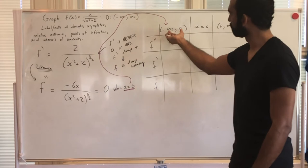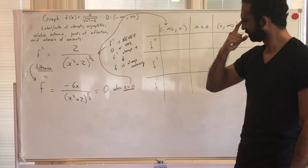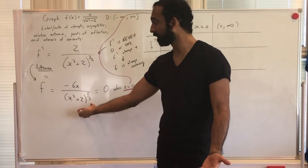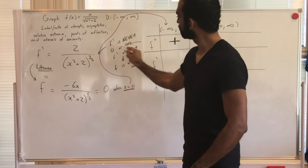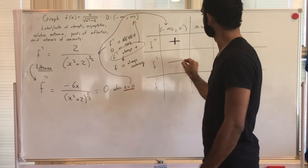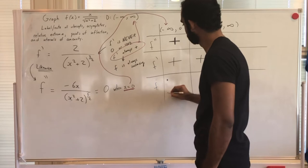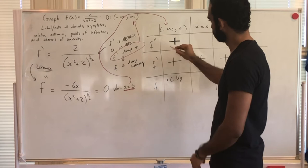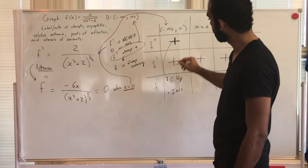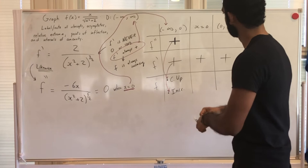On (−∞, 0), the second derivative: the numerator is negative times negative (positive), divided by always-positive denominator — so f'' is positive. The first derivative is always positive everywhere. So on this interval, f is concave up and always increasing.